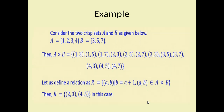Consider two crisp sets: A = {1, 2, 3, 4} and B = {3, 5, 7}. The Cartesian product gives all pairs: (1,3), (1,5), (1,7), (2,3), (2,5), (2,7), (3,3), (3,5), (3,7), (4,3), (4,5), (4,7). Now we define a specific relation: R = {(a, b) | b = a + 1}, meaning if a has some value like 2, then b will be 3.